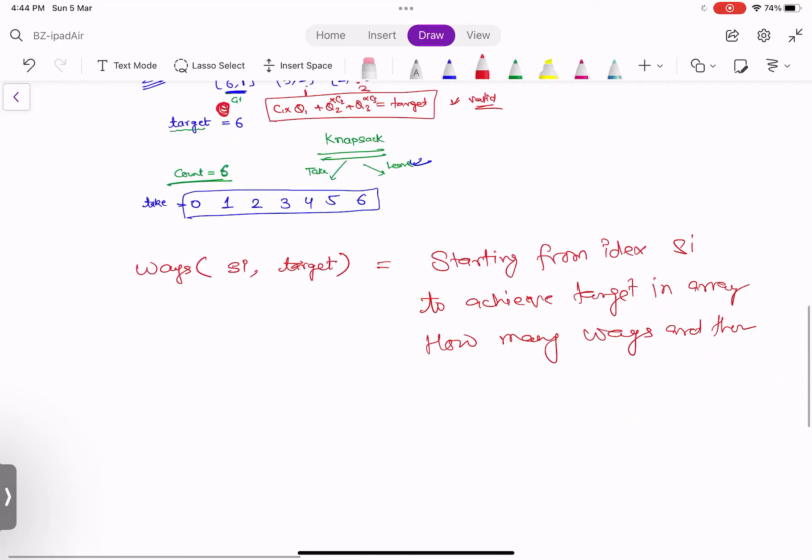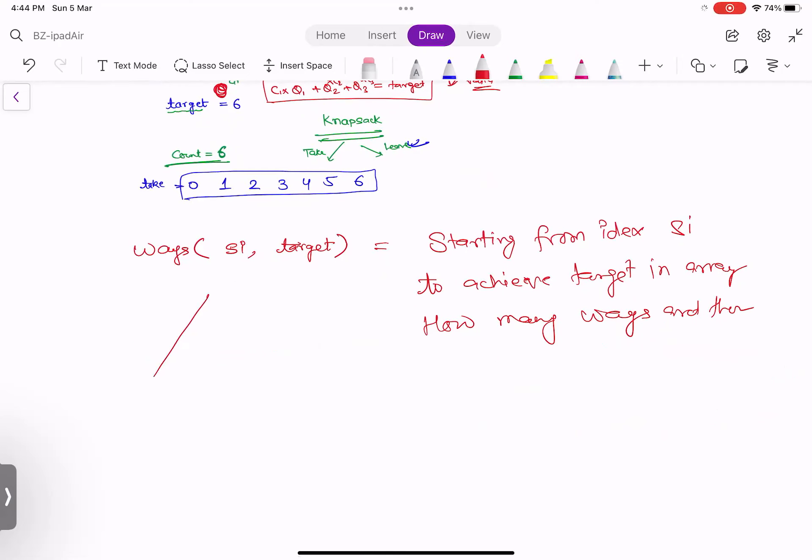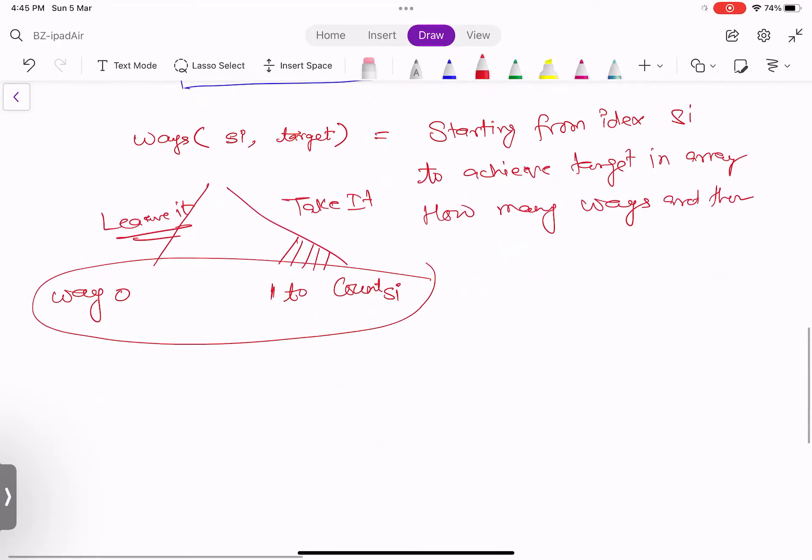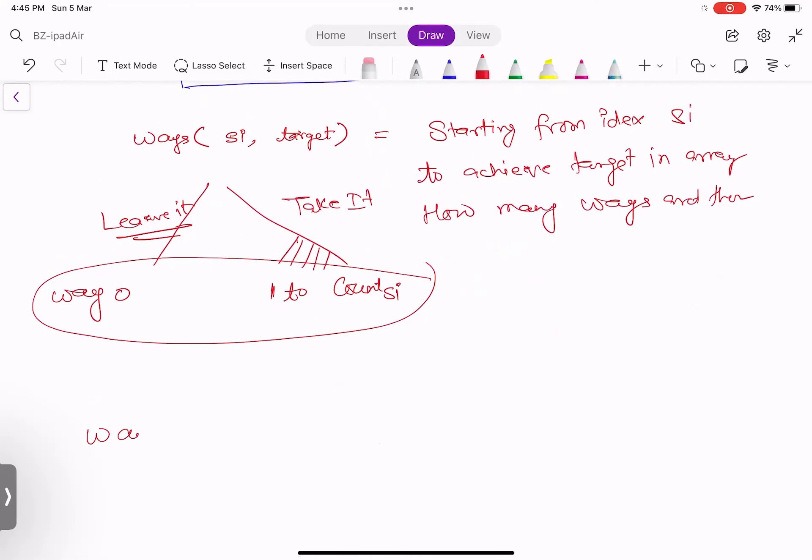The formulation is similar to knapsack. Here SI is the start index. Okay. So where we are starting from. So I am saying starting from index SI, from index SI to achieve targets, achieve target an array. How many ways are there? So I'm going from left to right. We could have formulated it right to left also. Okay. Got it. But this is one way, like consider every index to be the start index. Okay. Right. So I have two choices. One choice is giving me ways by leaving it, leave it. And another is giving, which is take it, but take it will bifurcate into multiple choices, which is going from one to the total count of I, count of SI. Is that right?